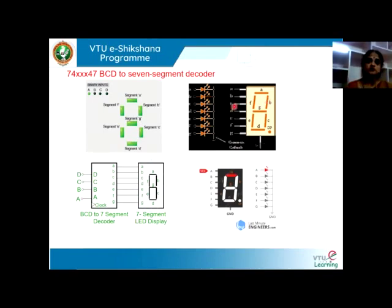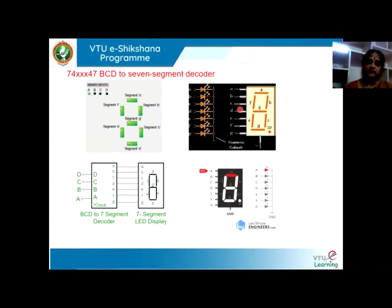If the display is of common anode type, then we have to use it in the way the common anode circuitry requires. On the other hand, if the display is of common cathode type, then we have to connect it accordingly. If the connections are reversed, the display is not going to function.